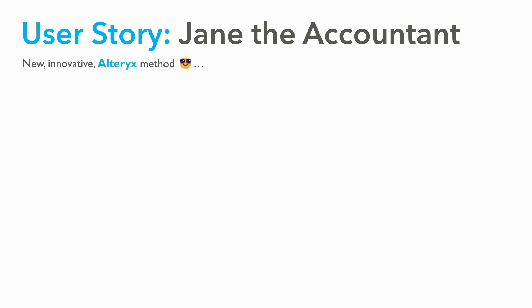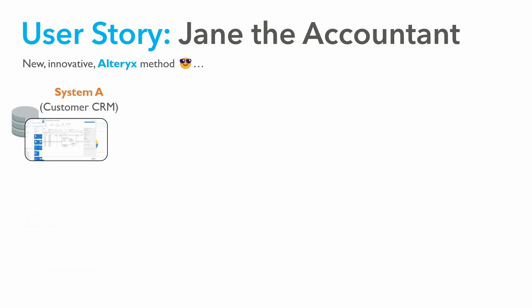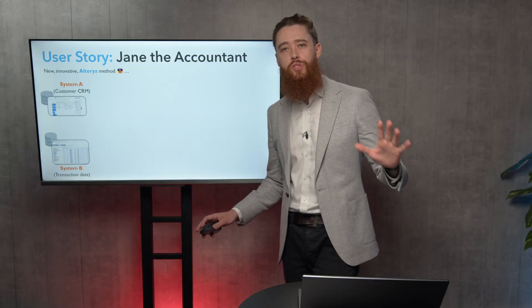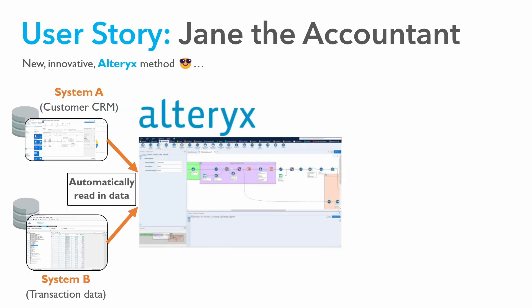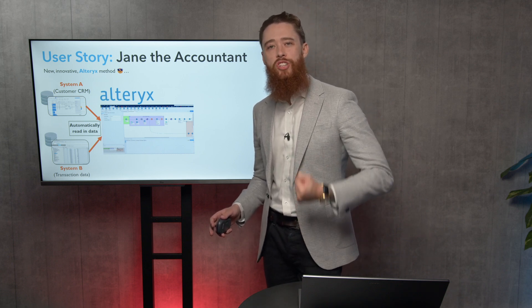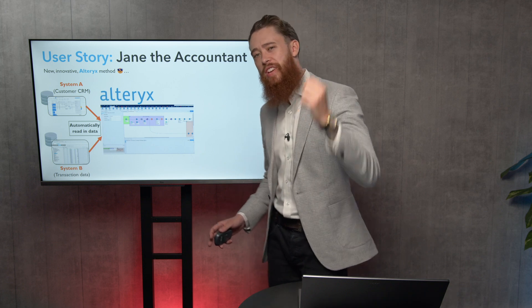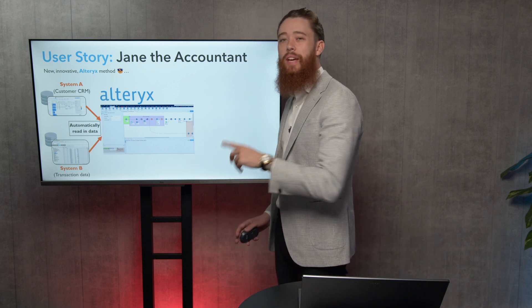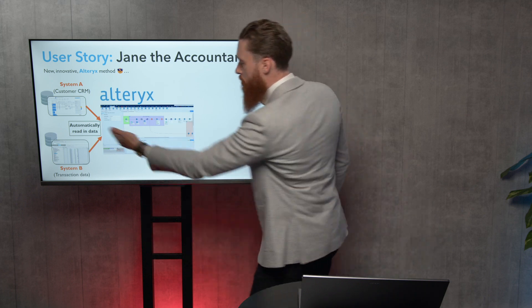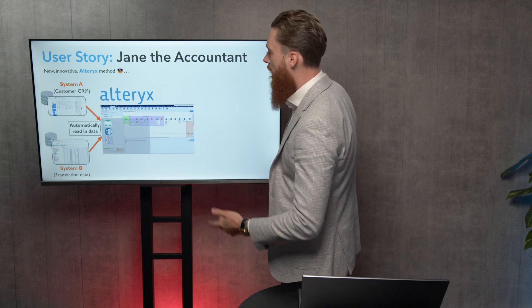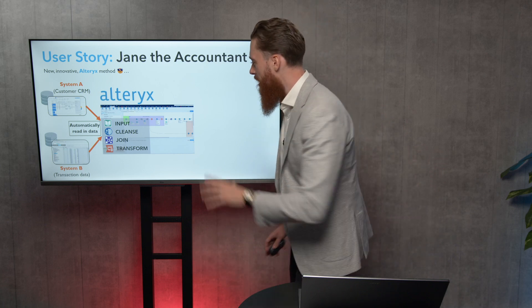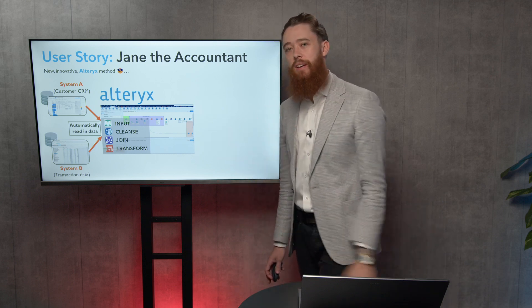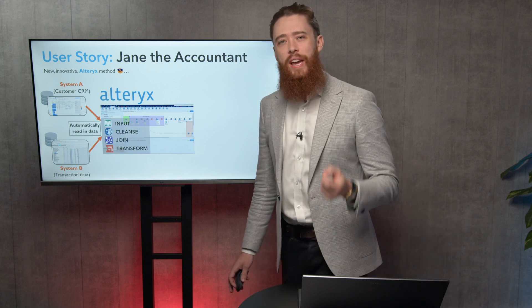Let's have a look at the alternative method — the new innovative Alteryx method. We've still got System A and System B; we're not changing that source data whatsoever. What we're changing is the processing of that data. Jane has configured her Alteryx workflow. Alteryx is an automated data preparation, blend, and analysis tool. Alteryx comes in and automatically reads the data into the program, then inputs, cleanses, joins, and transforms that data. Everything Jane was doing in the manual method is just being repeated here in Alteryx — we're just whizzing through in a fraction of the time.